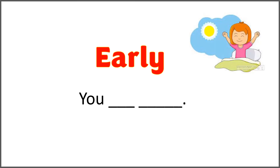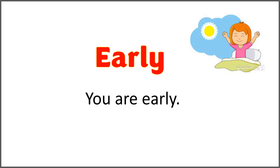The given word is 'early,' and the sentence is 'you, blank, blank.' Use 'early' with 'are' to complete the sentence. You are early. Now think — can you change the subject? Can you say 'they are early' or 'we are early' and the sentence will still be correct? The answer is yes.